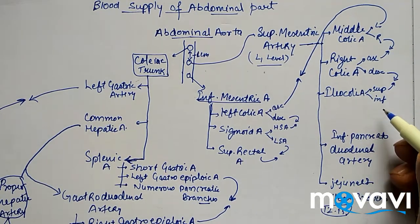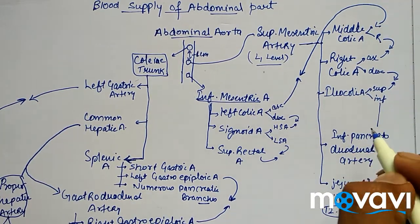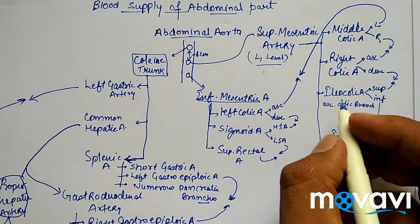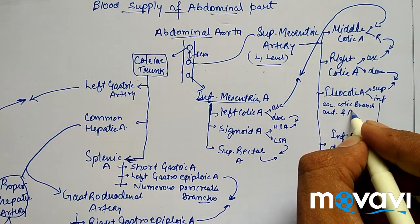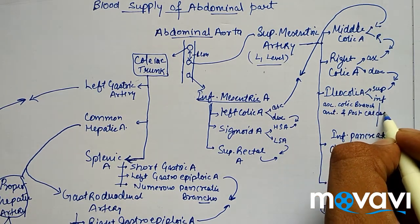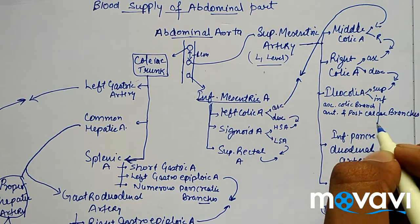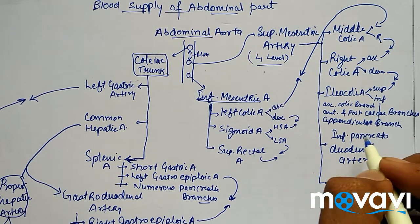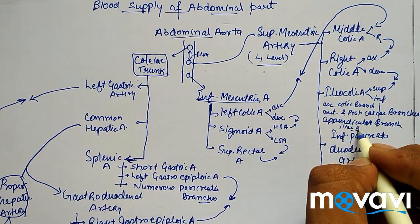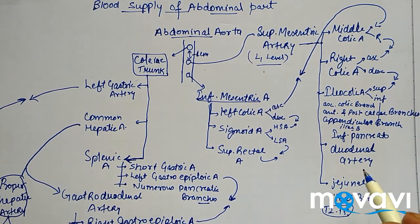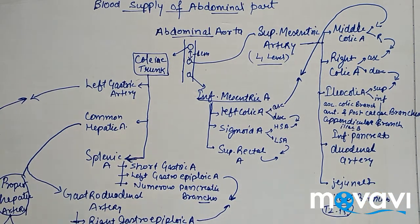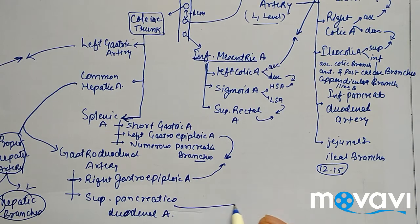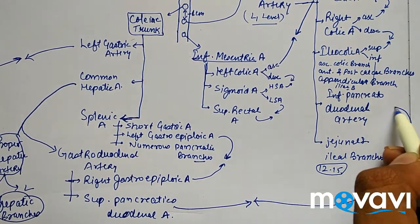The ileocolic artery has many branches: the ascending colic branch, anterior and posterior cecal branches, the appendicular branch, and the ileal branch. Furthermore, the inferior pancreaticoduodenal artery anastomoses with the superior pancreaticoduodenal artery.